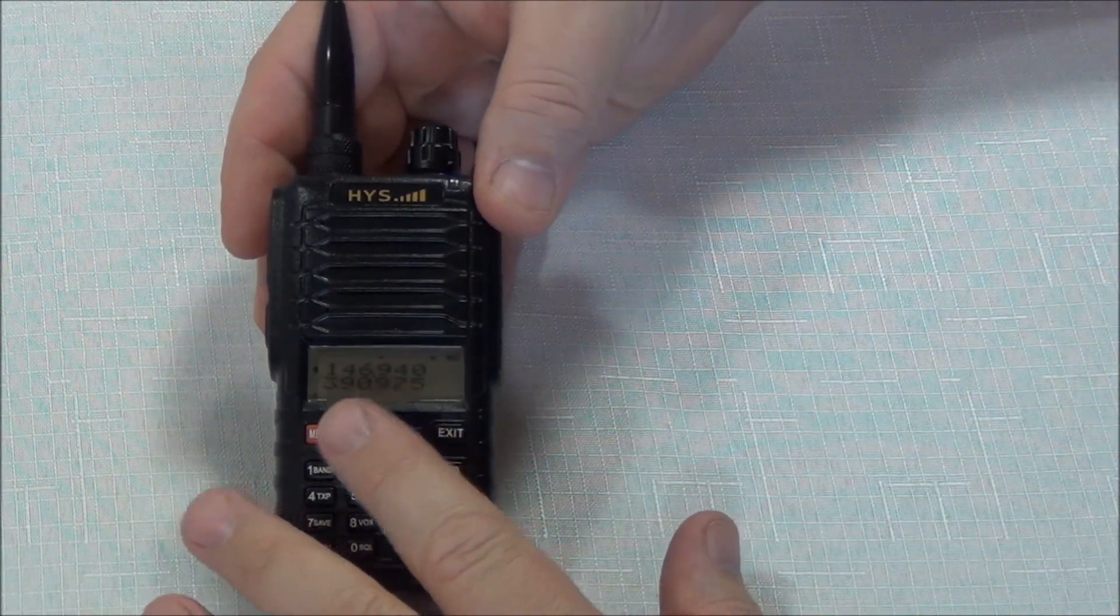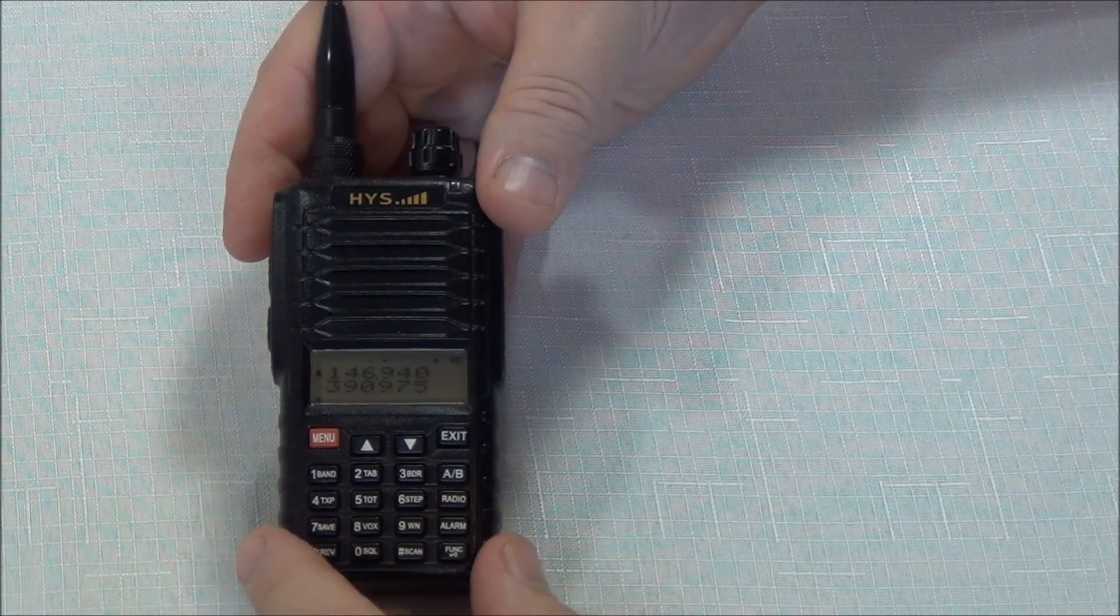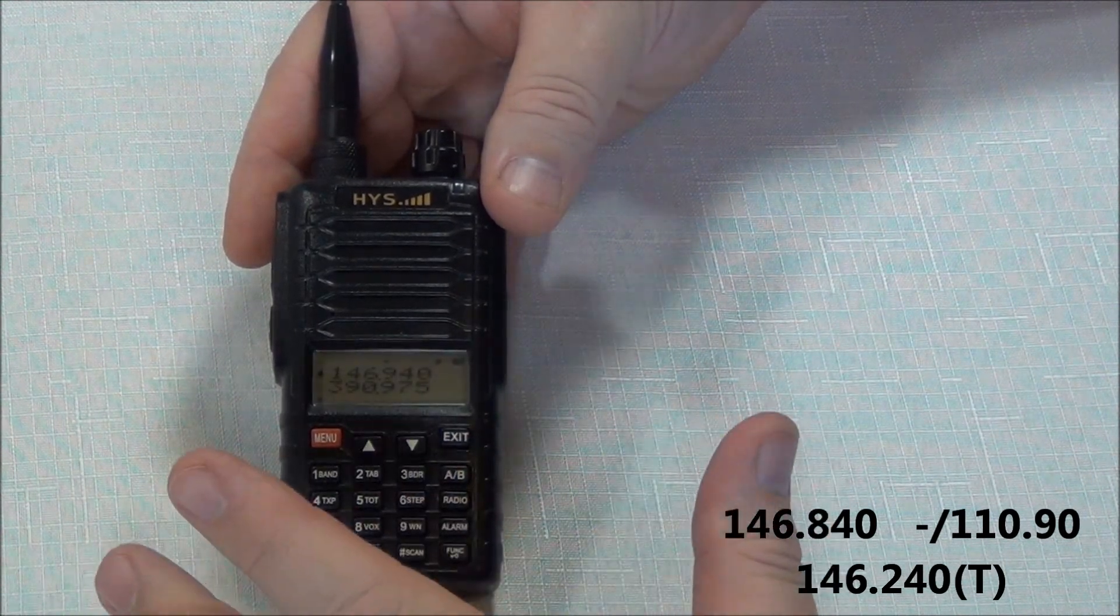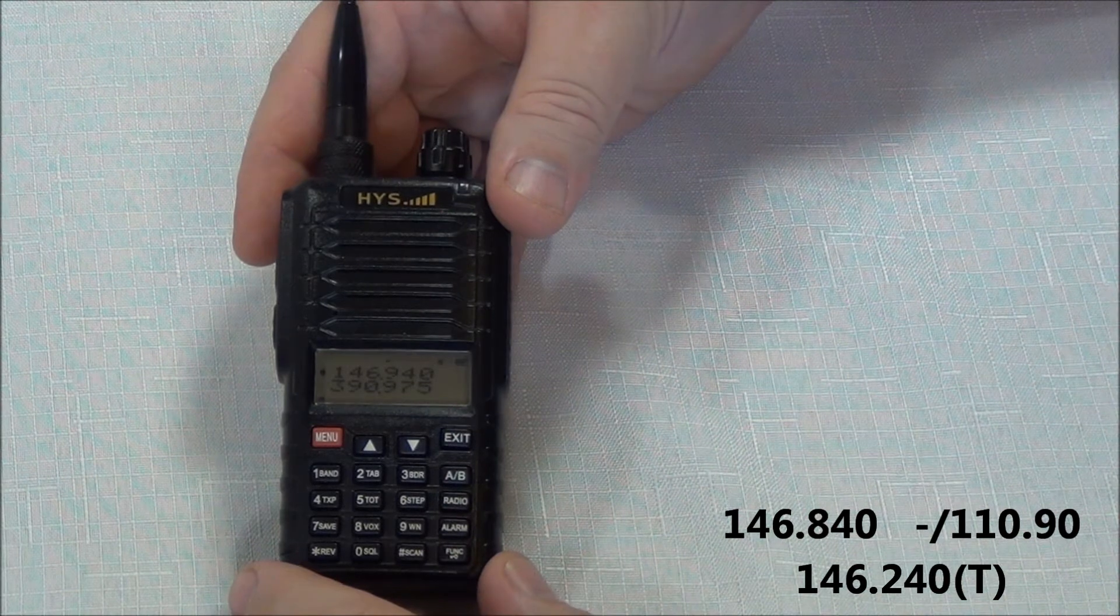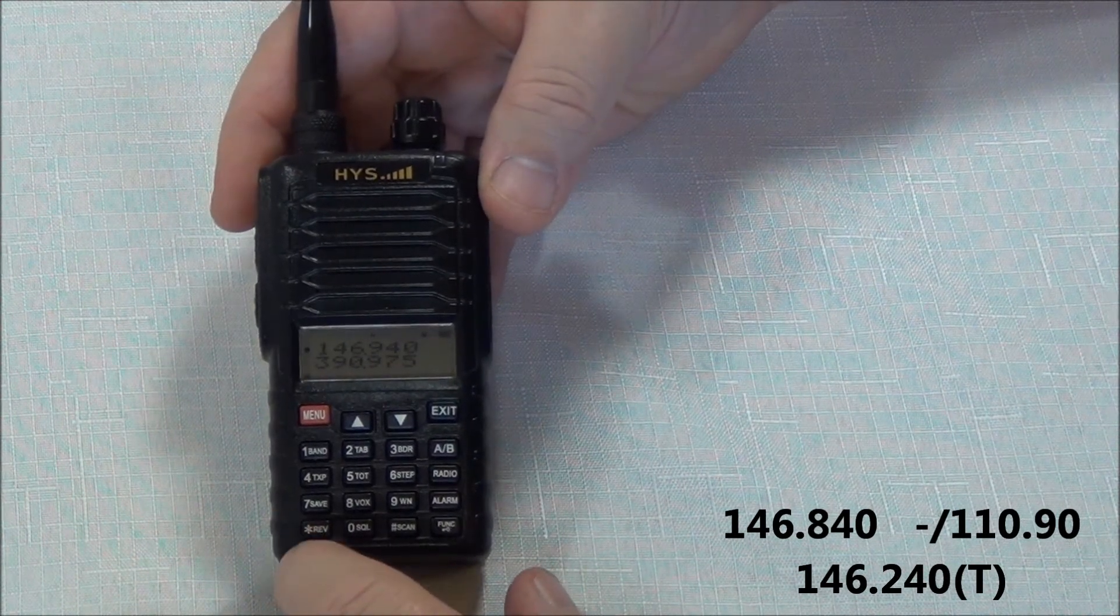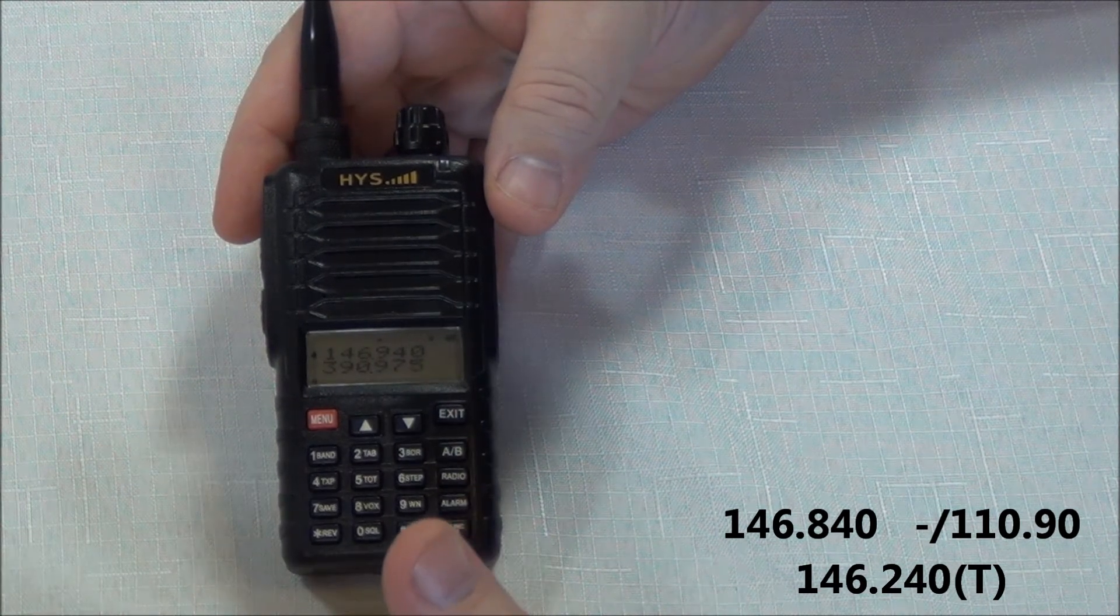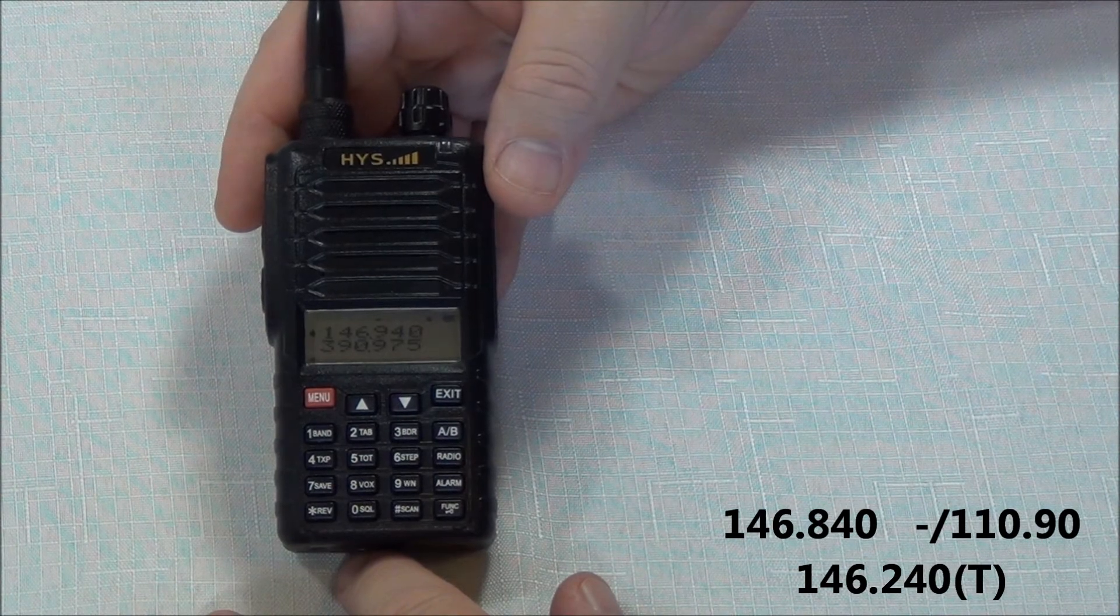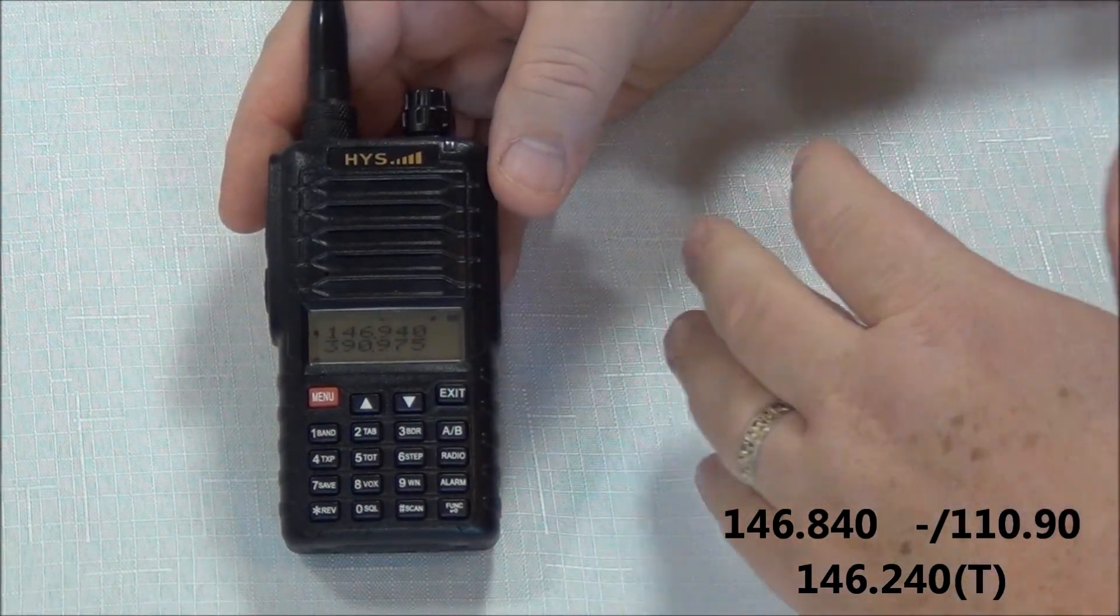The first thing you have to do is set the receive frequency, the frequency you're going to listen to. A lot of repeaters you'll see them listed on the internet with a number, a plus or minus, and then another number. The first number that you're going to see is the receive frequency. In this case, what we're going to set is 146.840. That is the frequency of the local Fort Worth Kilocycle Club repeater. The next number you usually see is a plus or minus. That is what they call the offset frequency. Then the next number that you see would be a PL tone or a squelch tone. Now, the plus or minus is going to tell you whether or not you transmit above that 146.840 or below that 146.840.